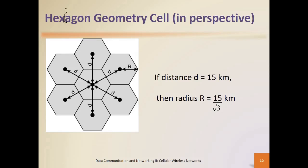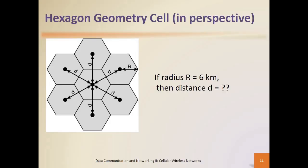That gives you the radius of the hexagon-shaped cell you're working with, so you can easily know where to place all the adjacent cells within a given geographical coverage. In another scenario, if you have a radius of 6 kilometers, you need to calculate the adjacent distance. Since d equals square root of three times r, you multiply: 6 times square root of three gives you the adjacent distance.